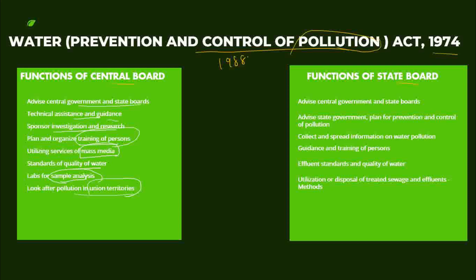The State Board advises only the state government to plan and prevent water pollution. They collect and spread information on water pollution, and provide guidance and training of personnel. Like the Central Board, they monitor effluent and wastewater from industries and set quality standards. Utilization and disposal of treated waste and effluent is a major function of the State Board. They also develop proper treatment methods.